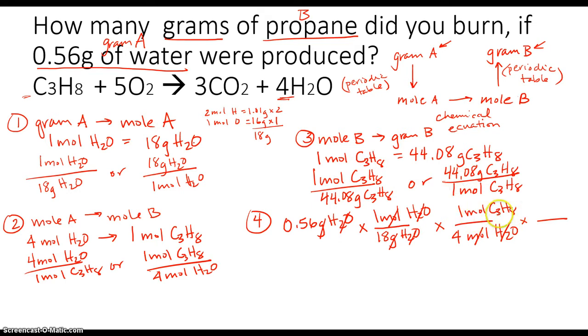So that tells me that using this last set of tiles, I need to make sure moles of C3H8 are on the bottom. So in that case I would use this one, one mole of C3H8. And that works out to be 44.08 grams of C3H8. And those cancel out.